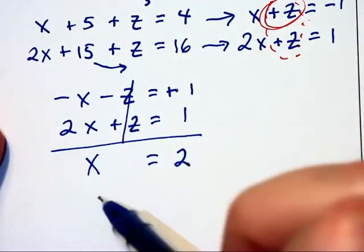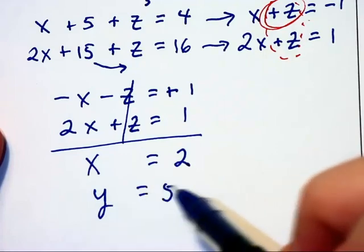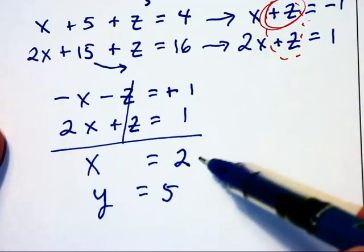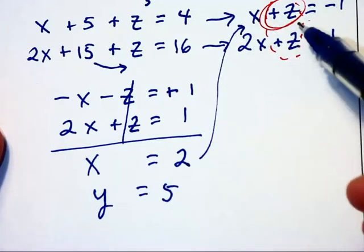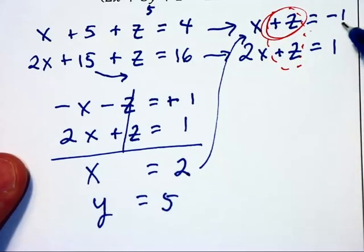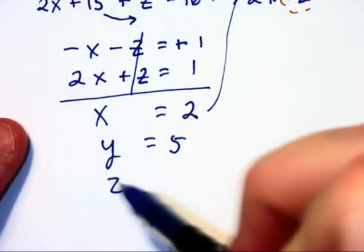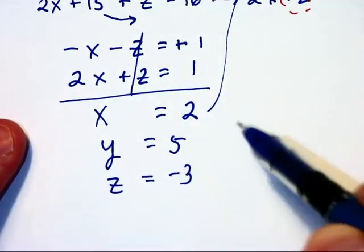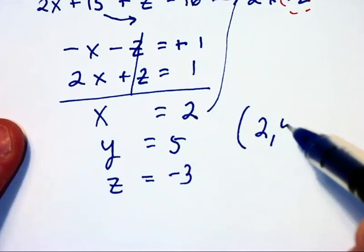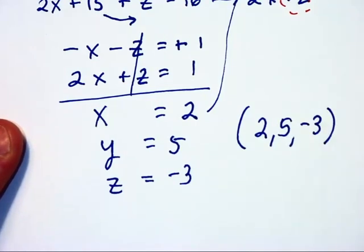we already know y is equal to 5, we need z, so 2 plus something is negative 1, that must be 2 plus negative 3, therefore z will equal negative 3, and our solution will be 2, 5, negative 3 for this problem.